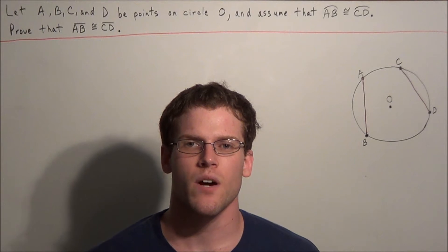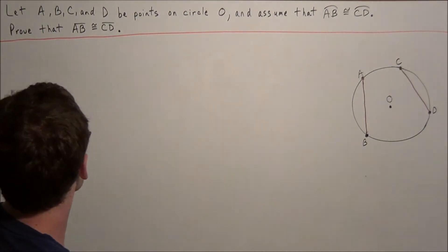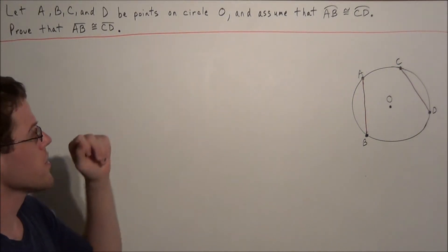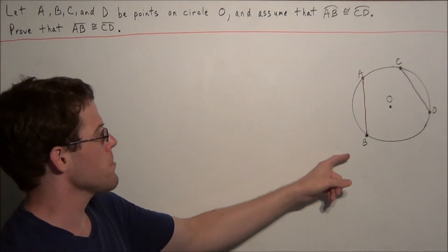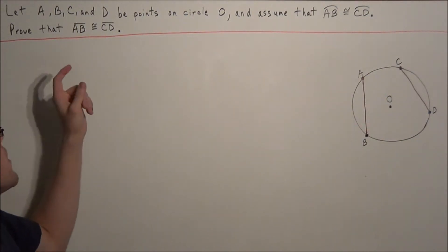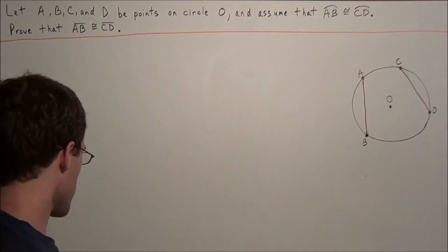Hi, my name is Vincent, and today I want to take a look at a circle geometry proof. So we have the problem: let A, B, C, and D be points on circle O, and assume that arc AB is congruent to arc CD. And we need to prove that chord AB is congruent to chord CD.